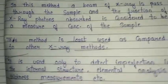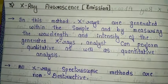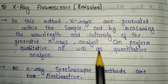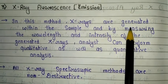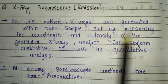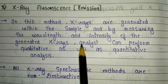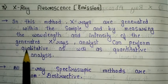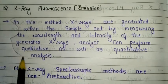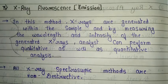The third important category of X-ray spectroscopy is X-ray fluorescence, also called X-ray emission. In this method, X-rays are generated within the sample, and by measuring the wavelength and intensity of the generated X-rays, an analyst can perform qualitative as well as quantitative analysis. These are the basic important points about X-ray fluorescence or X-ray emission.